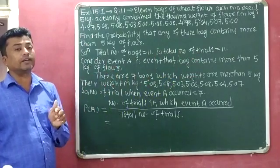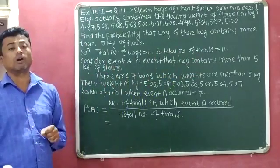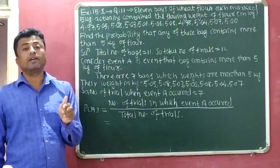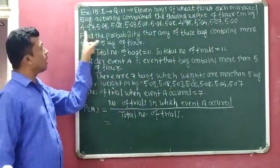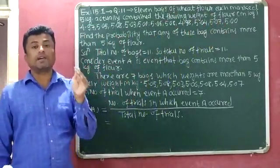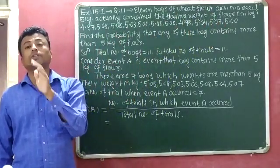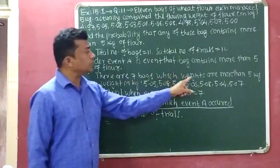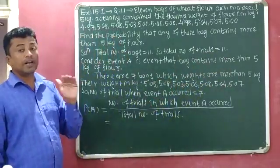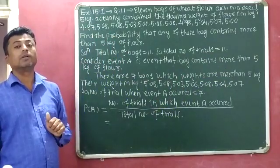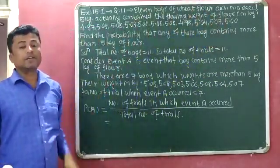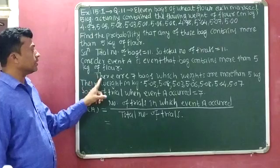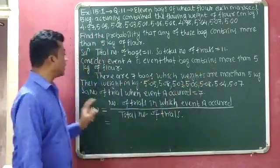Event A is related to bags containing more than 5 kilograms of flour. Out of all 11 bags, we will first identify the number of bags whose weight is more than 5 kilograms. There are 7 bags whose weights are more than 5 kilograms.